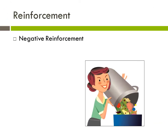Negative reinforcement means we're taking something away to increase a behavior. A good example is a teenager who needs to take the garbage out but is too busy, so his mom nags him. After being nagged for a long time, the teenager finally takes out the garbage to get rid of the nagging. He's eliminating the negative stimulus, which reinforces and will likely increase the chances that he will take out the garbage again next week.